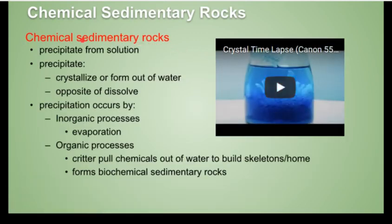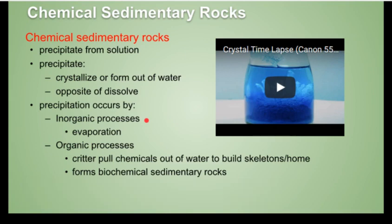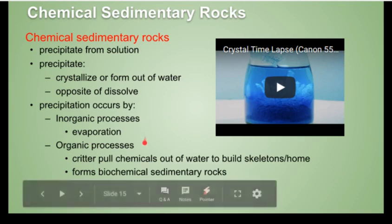Chemical sedimentary rocks are, unlike clastic sedimentary rocks, rocks that precipitate from solution. By precipitate I mean crystallize or form out of water, which is the opposite of dissolve. I have included a video of crystallization, and I'll put the link in the description. Precipitation can occur either by inorganic processes like evaporation or from groundwater, or organic processes such as critters pulling chemicals out of the water to build their skeletons and homes, or large piles of shells from those critters.